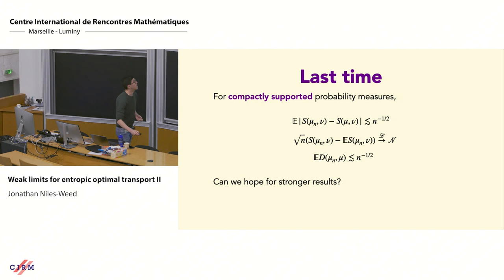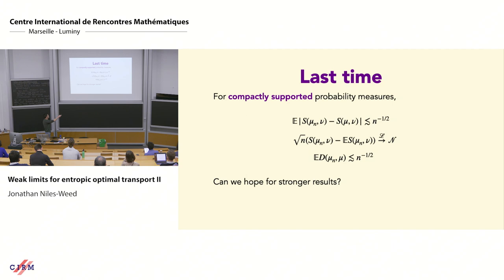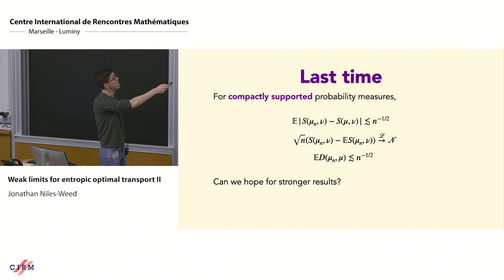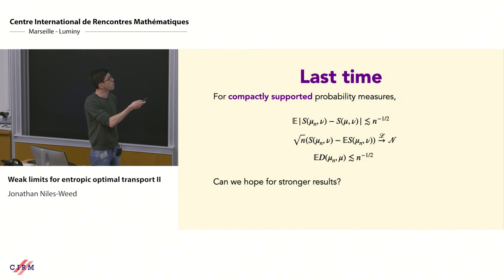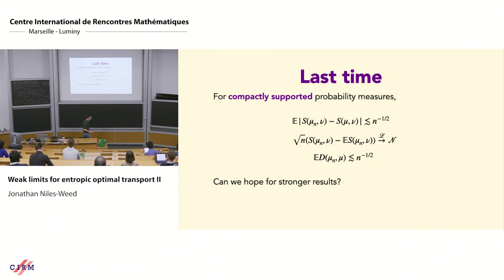A similar argument shows we have a central limit theorem centered at the expectation of the empirical quantity — I'm writing everything in the one-sample case for simplicity. So we have a CLT, centered not quite at the right place, but at least without some of the aggressive conditions that Del Barrio and Loubes needed. And finally, this object D — sometimes called the Sinkhorn divergence — also shrinks at the rate n to the negative one-half.